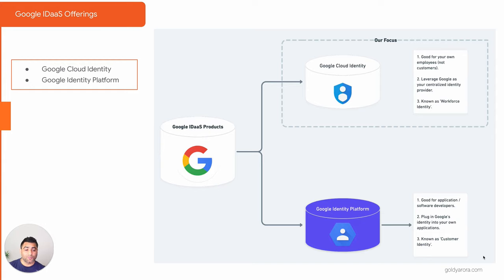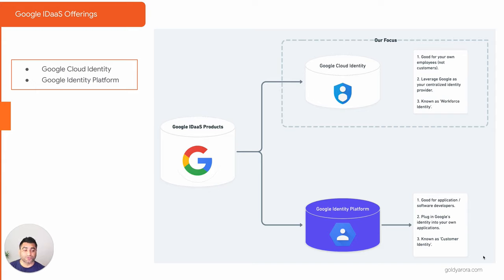Option two is to go with Google Identity Platform. Instead of building it yourself, you just plug and play Google's identity module. Things like login, password reset, MFA, and SAML are all handled by Google Identity Platform itself, so you don't need to invest time there. It is ideal for application or software developers who can plug Google's identity into their application. It is also known as customer identity.